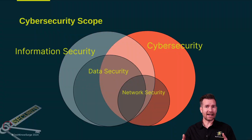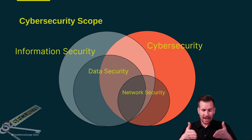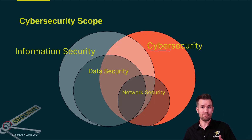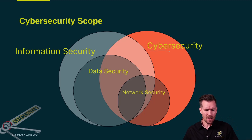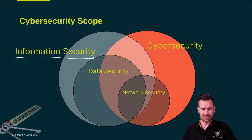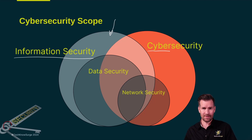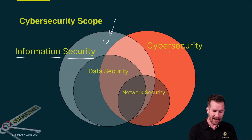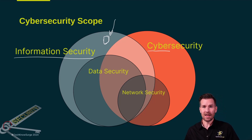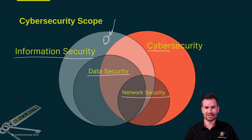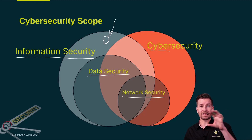Depending on who you ask or what resource you're looking at, cybersecurity can have some different perspectives. What is the scope of cybersecurity? Technically, cyber means computer, computer networks, or some sort of technology — so it's security around the technology. But we also have the term information security. There's information that falls outside the cyber world — for example, when we print off a document, it's now in paper form. If we throw it in the trash with sensitive information on it, that information gets exposed. So that document falls outside of cybersecurity, but it's still something we need to be concerned about. There are also terms such as data security and network security, and depending on how you define this, they'll all look a little different.